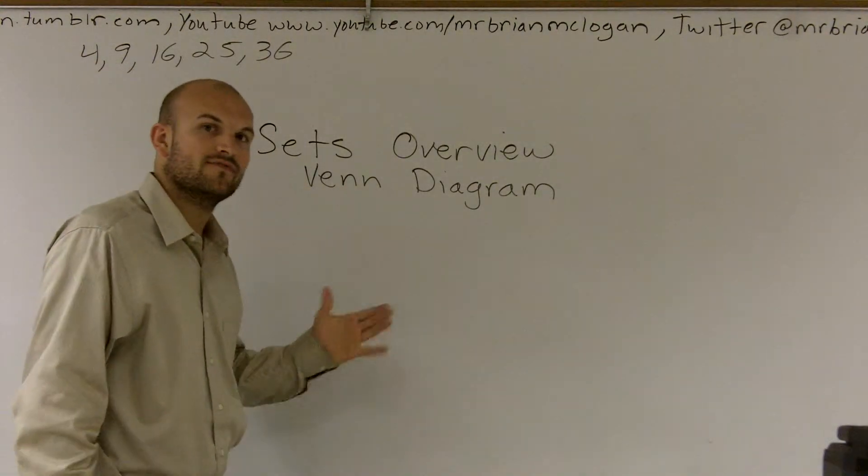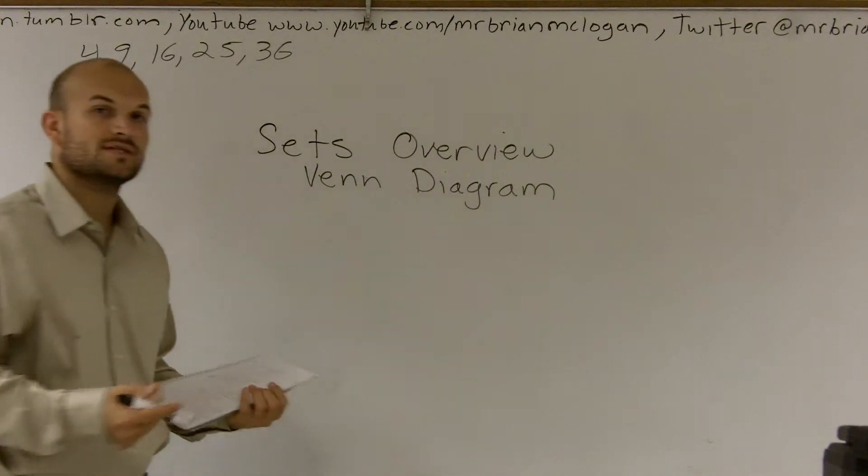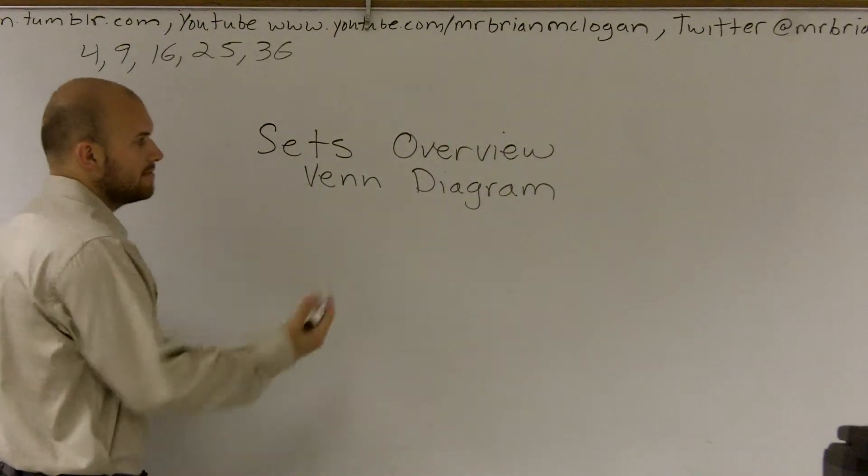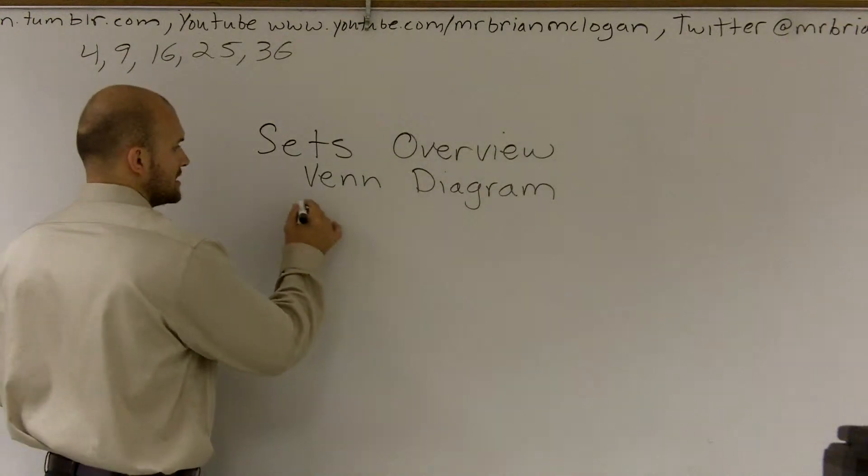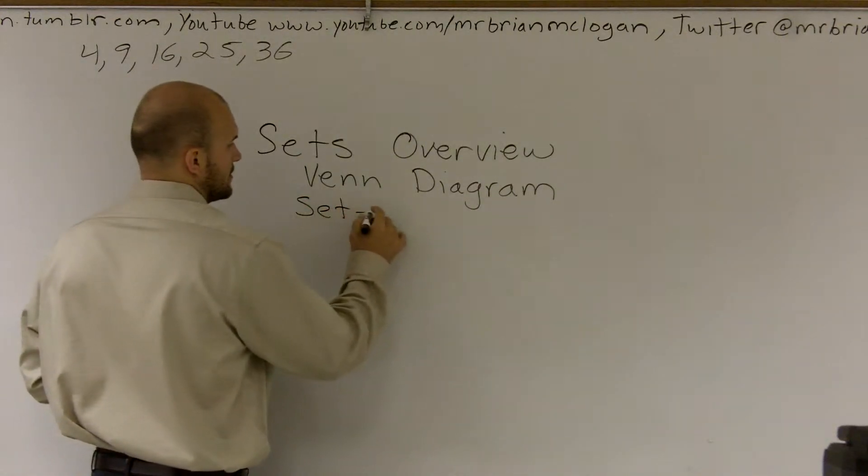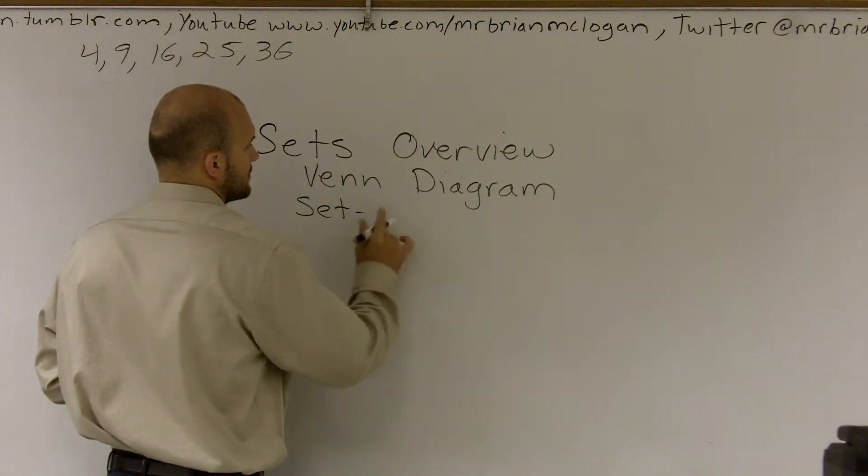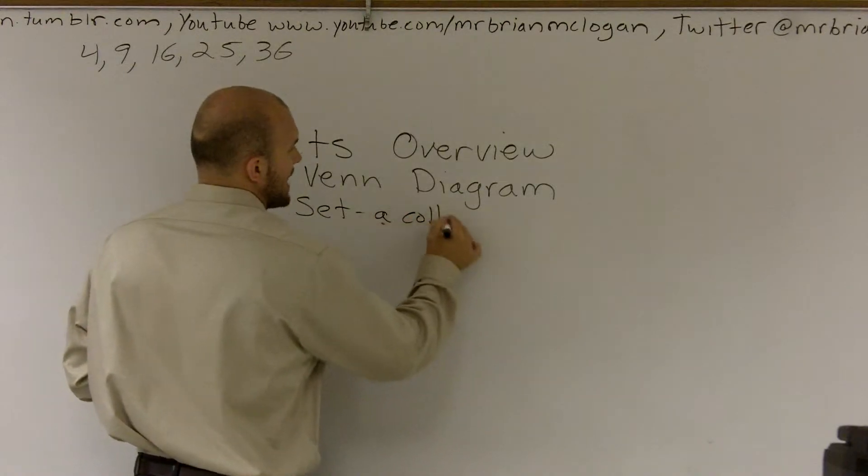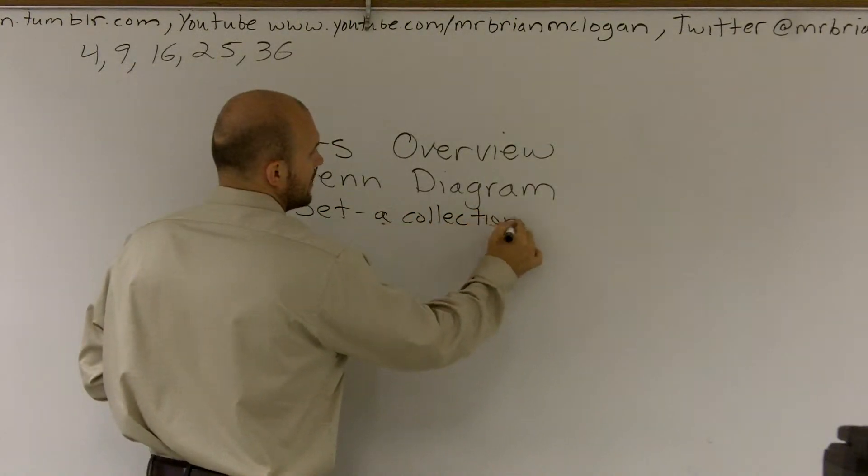But I want to do one more with a Venn diagram where I actually have two sets included on there. Again, remember a set is just a collection of objects, and those objects can really be anything.